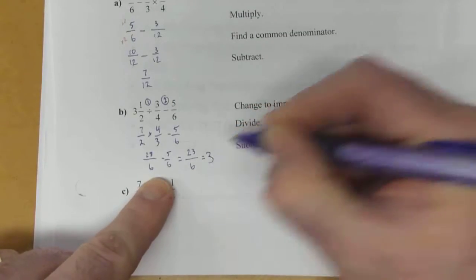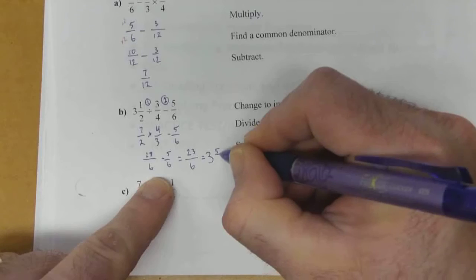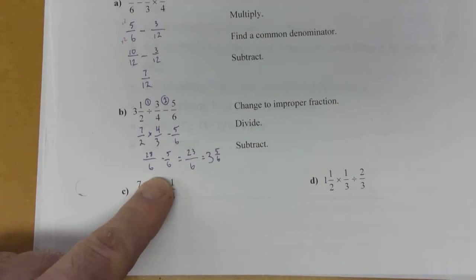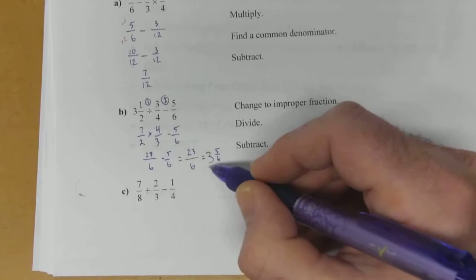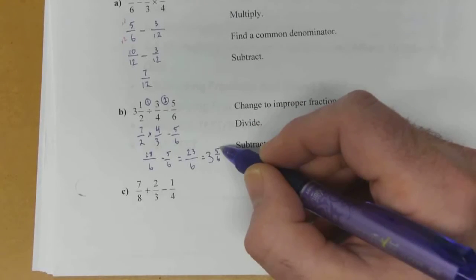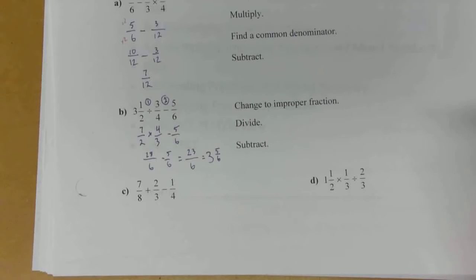Which then, as a mixed number, is 3 and 5 sixths. 6 goes into 23 three times with 5 remainder. So 3 and 5 sixths is your answer for that one.